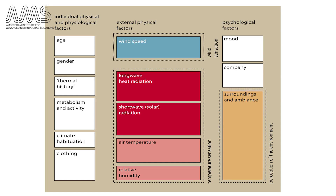Of course all these personal factors cannot be changed by urban design. However, wind can be changed very well through urban design on a local scale. Short wave radiation — sun and shade — and long wave radiation, depending on the materials of the urban environment, can also be changed effectively with local design interventions. Air temperature and relative humidity can be influenced by larger scale interventions or many small ones combined. The ambience of a space also influences how you experience temperature, and this can be manipulated through the design of the urban space.